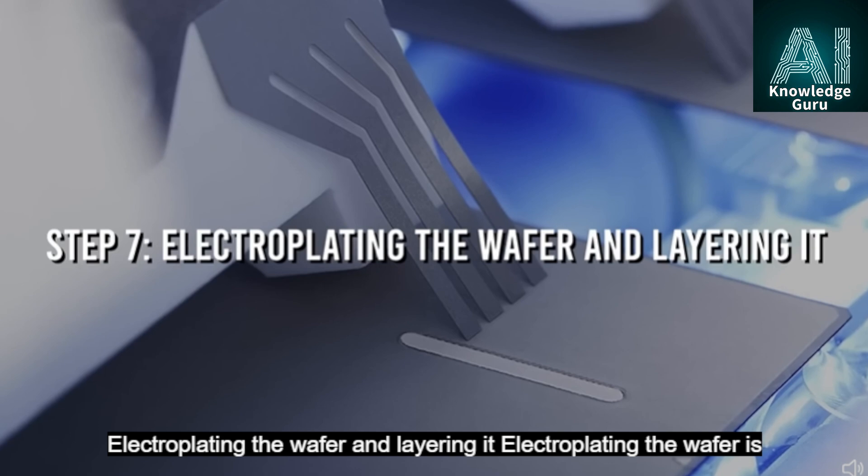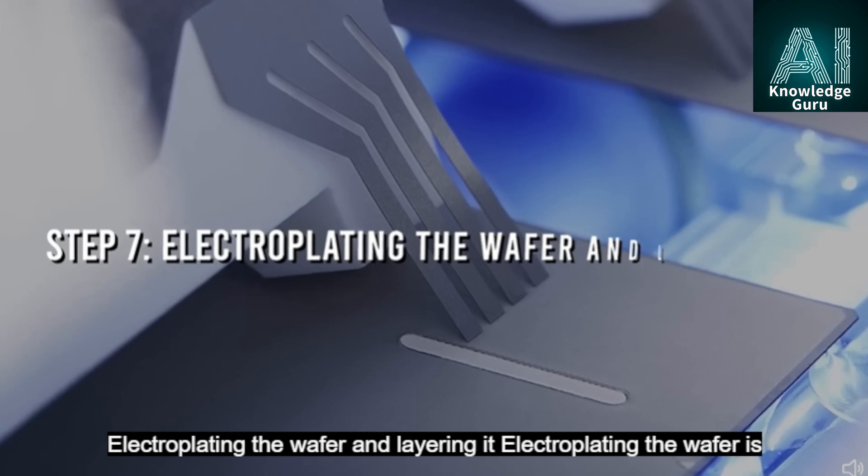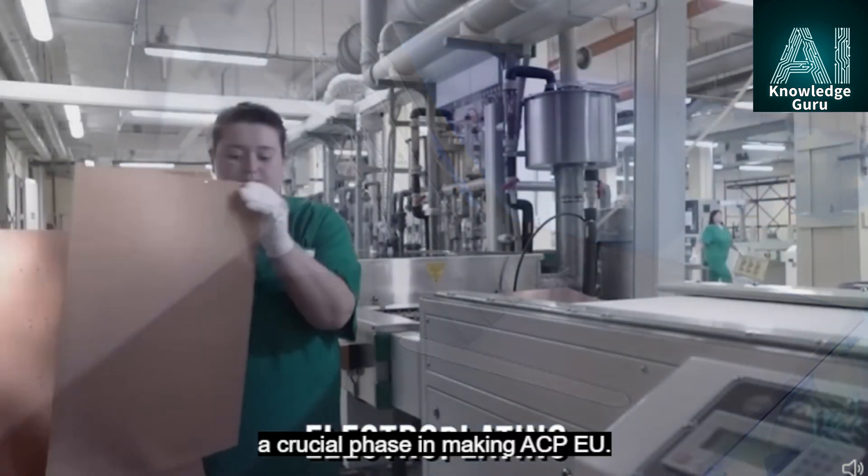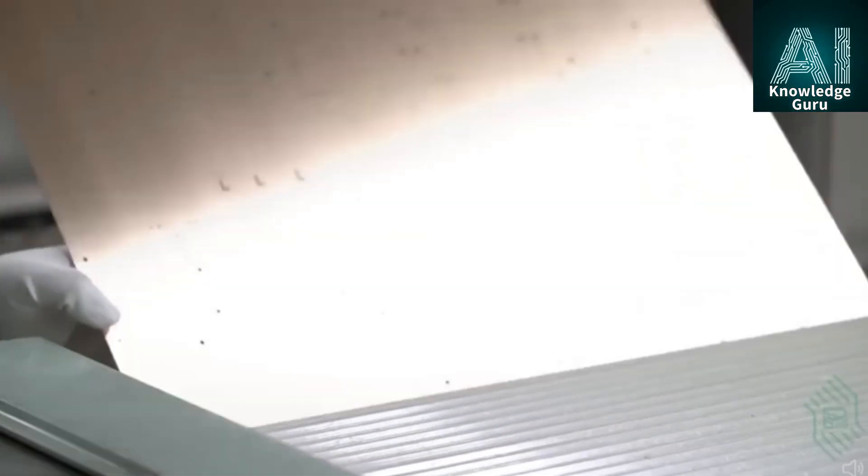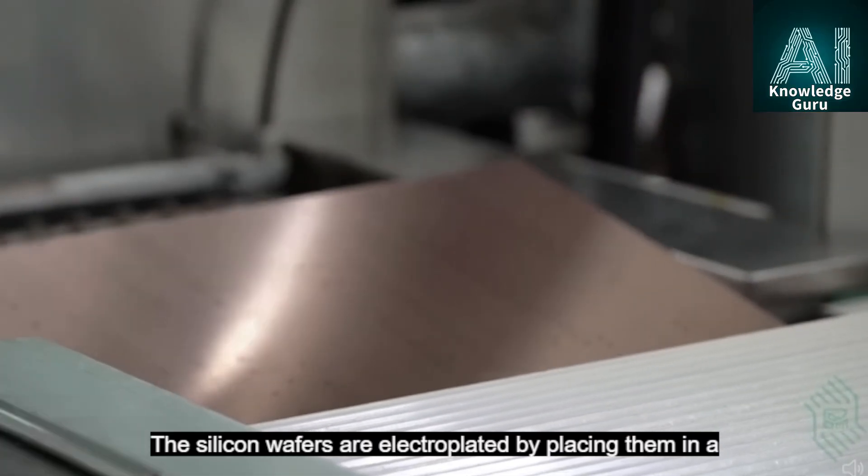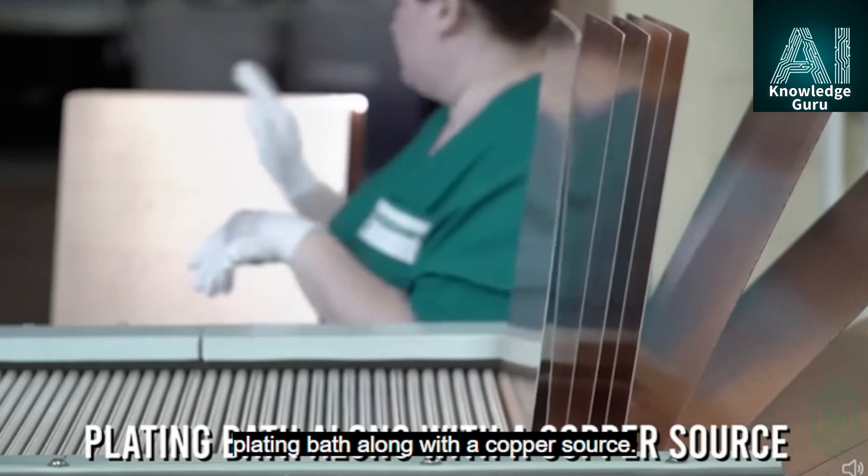Step 7: Electroplating the wafer and layering it. Electroplating the wafer is a crucial phase in making a CPU. The silicon wafers are electroplated by placing them in a plating bath along with a copper source.